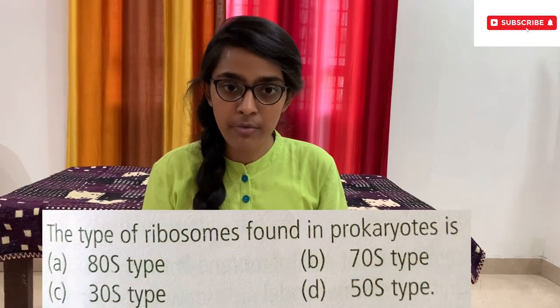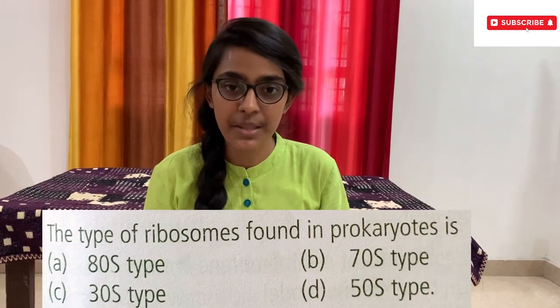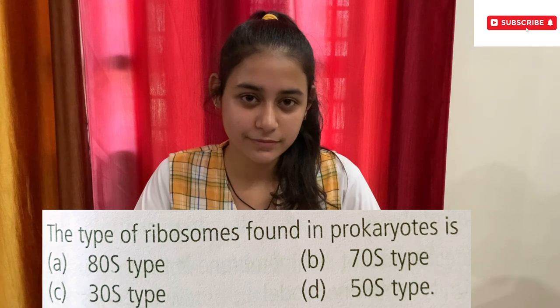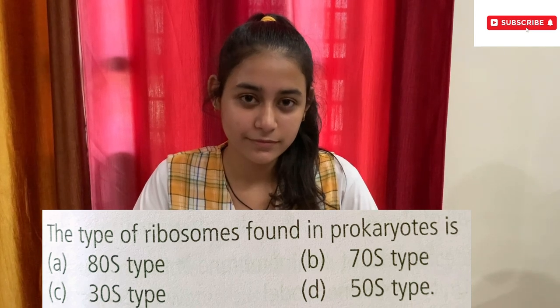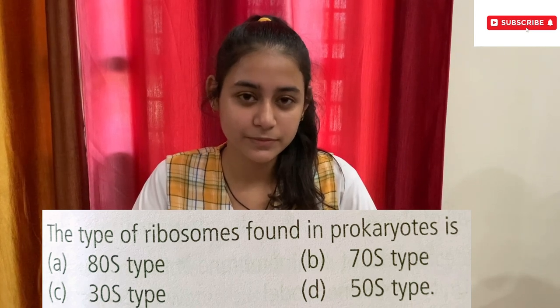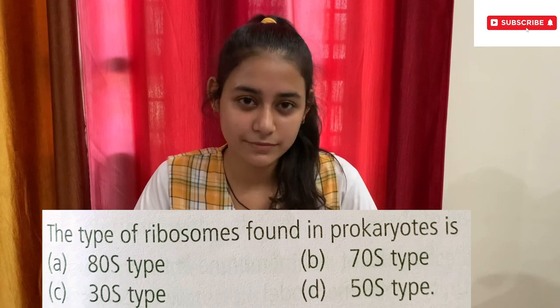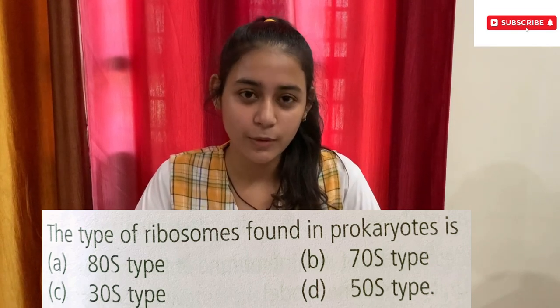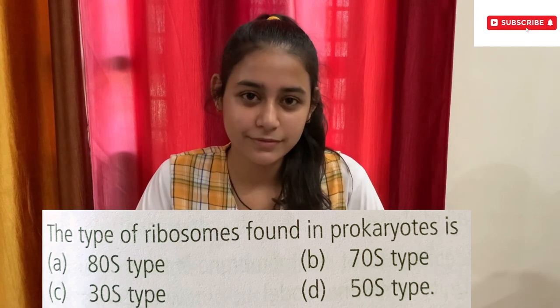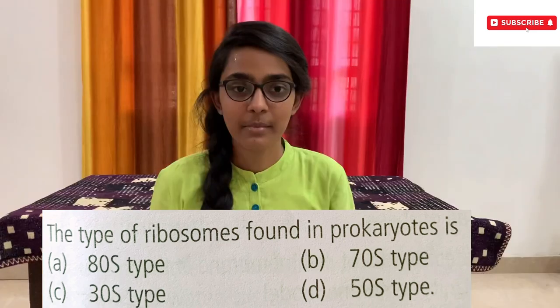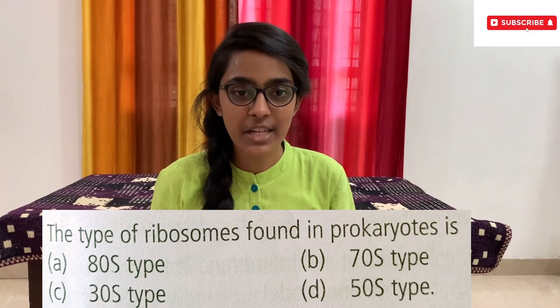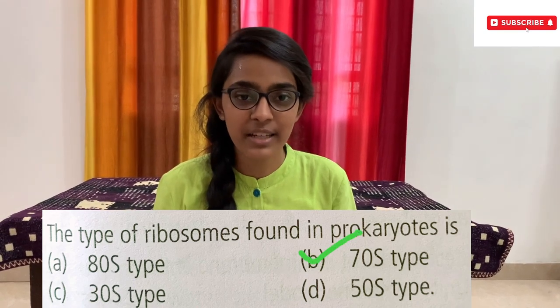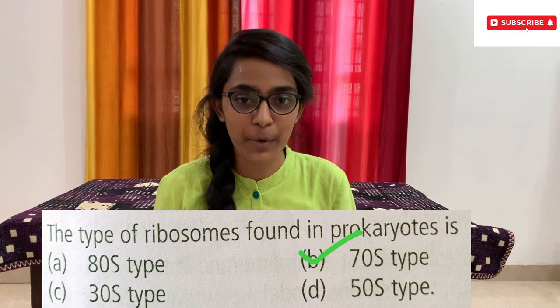The next question goes to Simran. The type of ribosomes found in prokaryotes is — options: A) 80S type, B) 70S type, C) 30S type, D) 50S type. Option B, 70S type. Are you sure? Yes ma'am. Option B, 70S type, is the correct answer. Give her a huge round of applause!